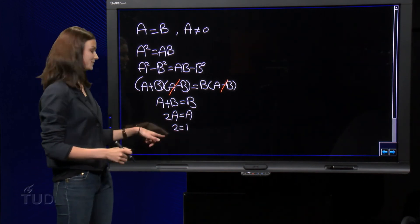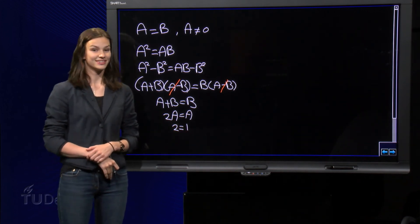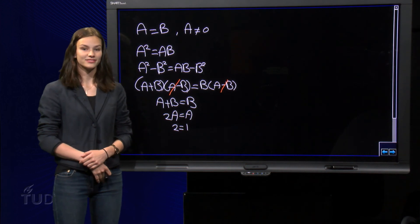So, now we proved that 2 is equal to 1. Clearly, we must have made an error somewhere. Did you see the error?